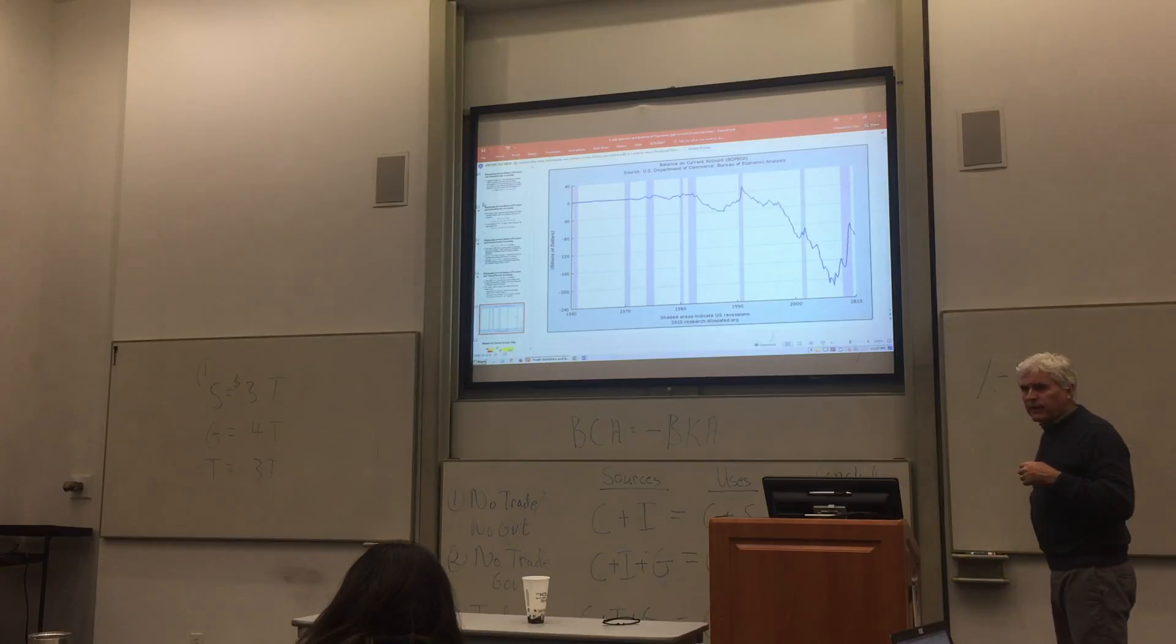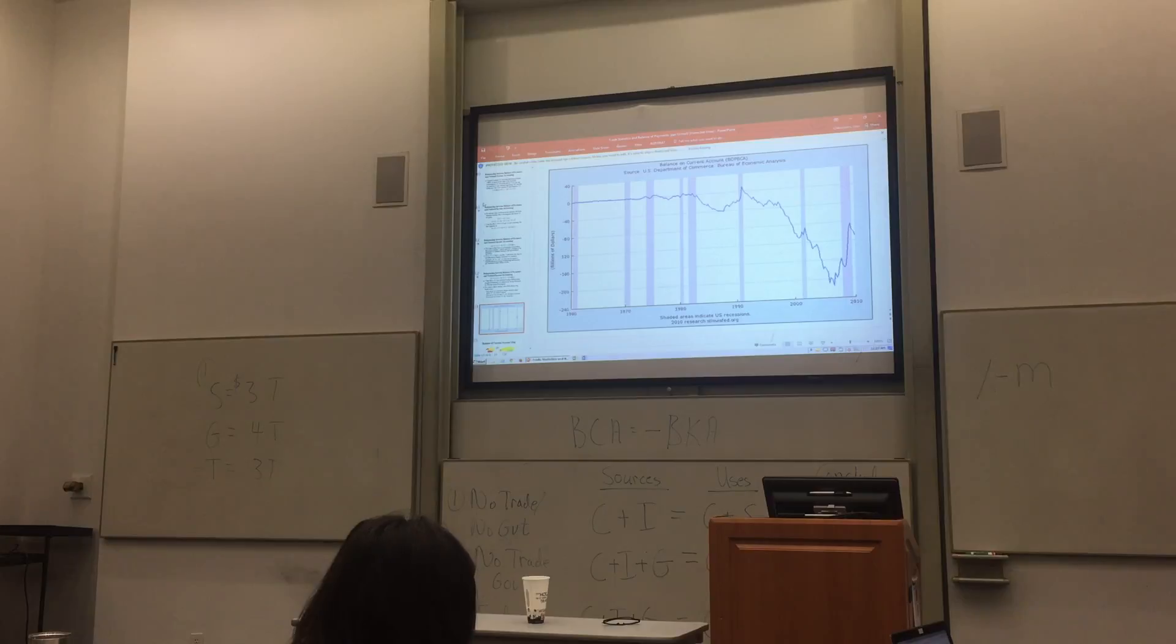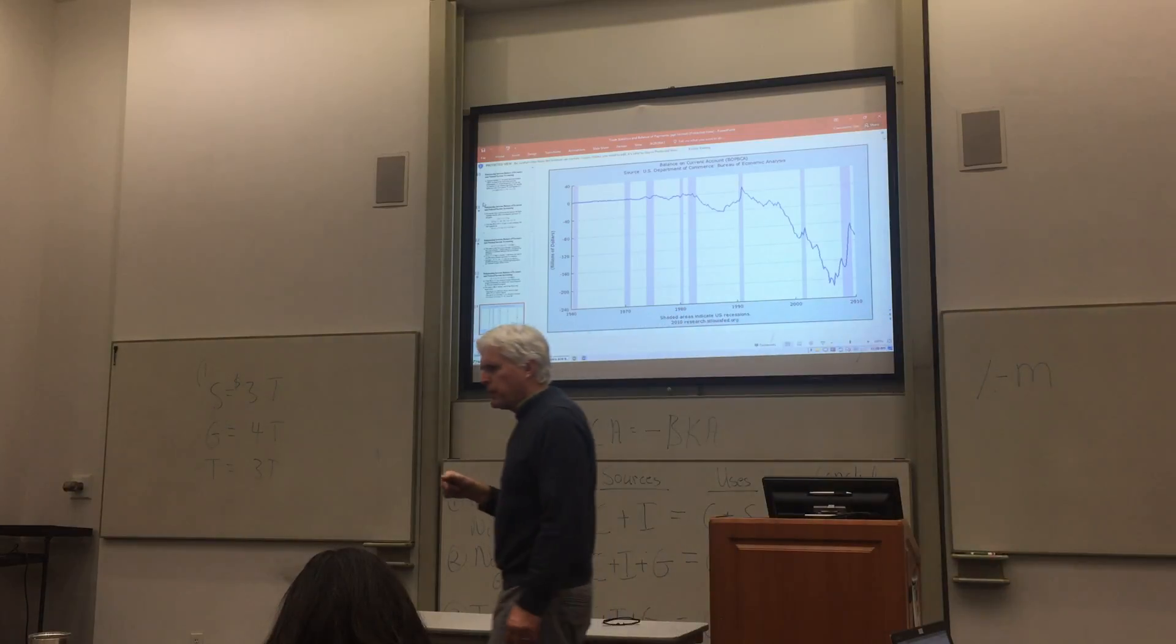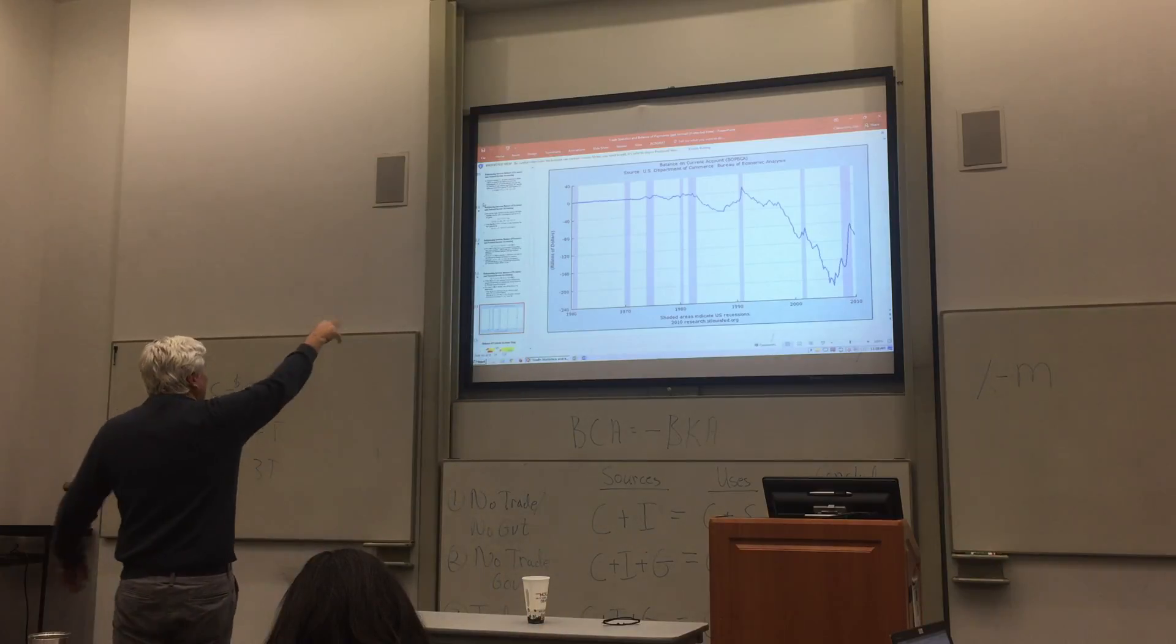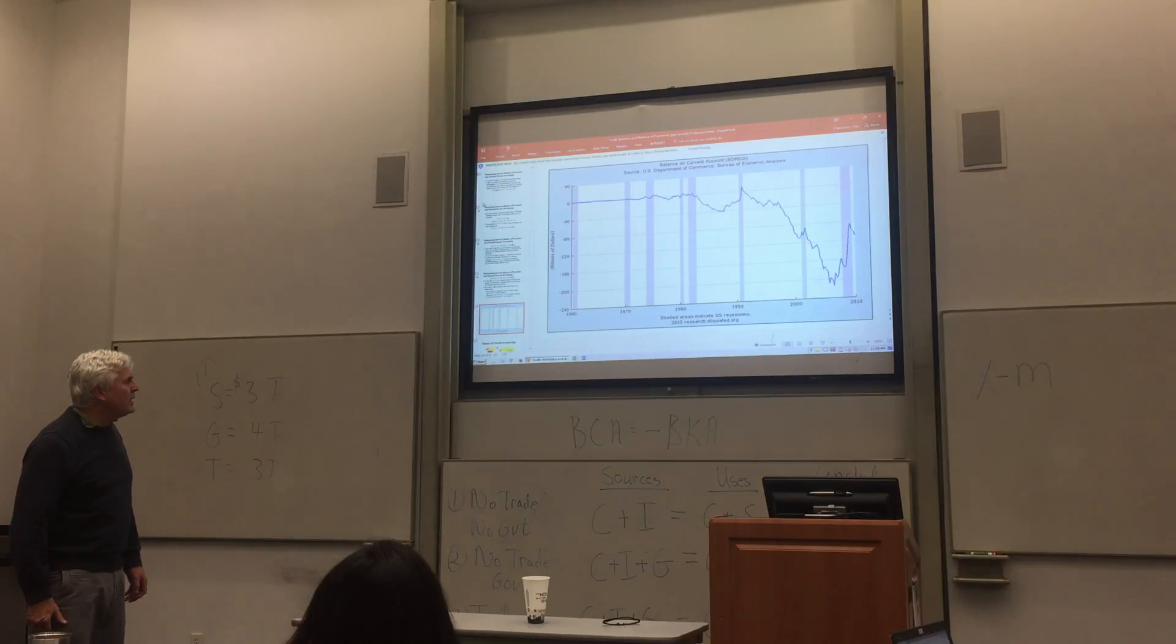This is the U.S. current account deficit, or excuse me, current account balance. Basically, it's the difference between imports and exports, when imports and exports are broadened to include things like unilateral transfers. And what you're seeing here is that really for the past 30-some years, the U.S. has substantially had a deficit in its current account. We have imported more than we have exported. And we've done that for, except for that one little bit during the 91 recession, we have had a negative in our current account.